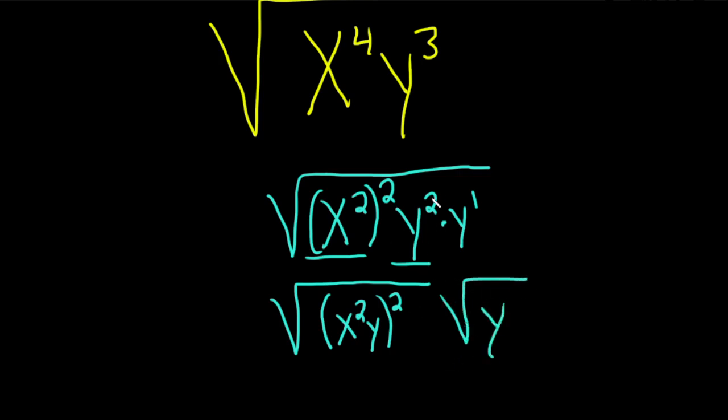And break it up into two square roots. Basically, we took the square root of this piece here and we combined these.